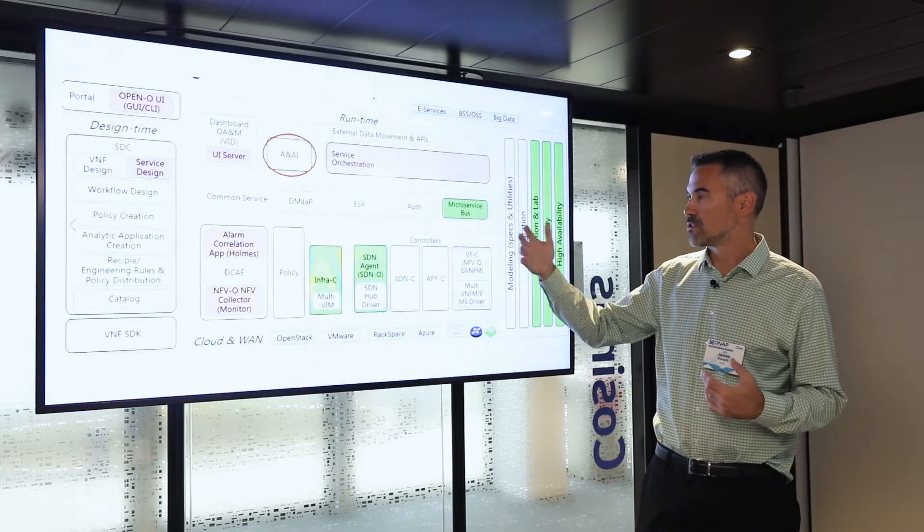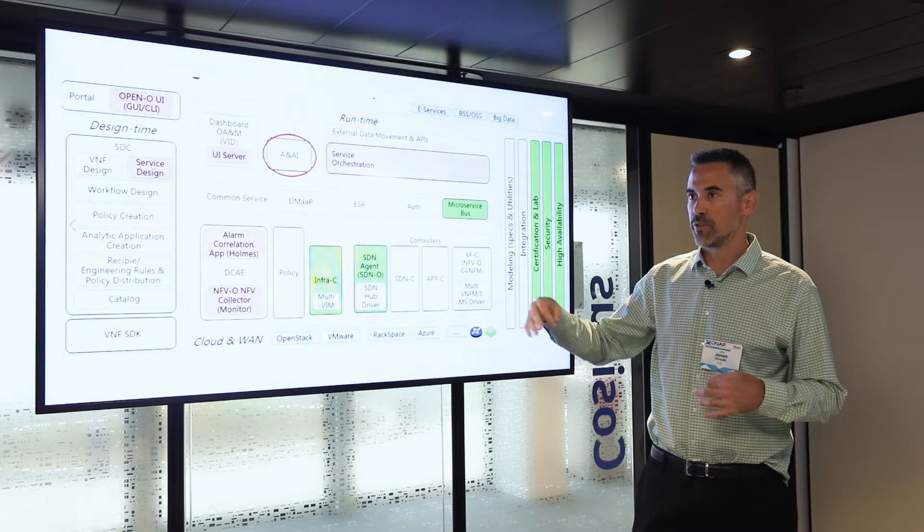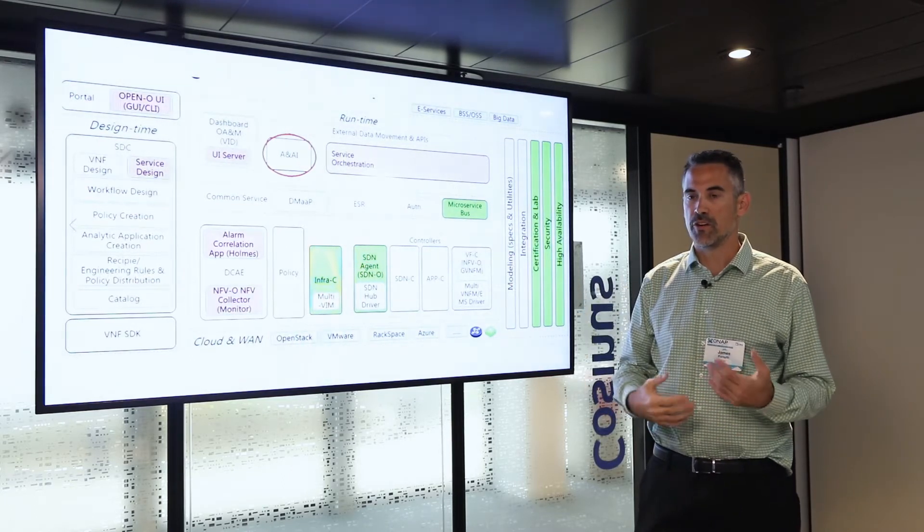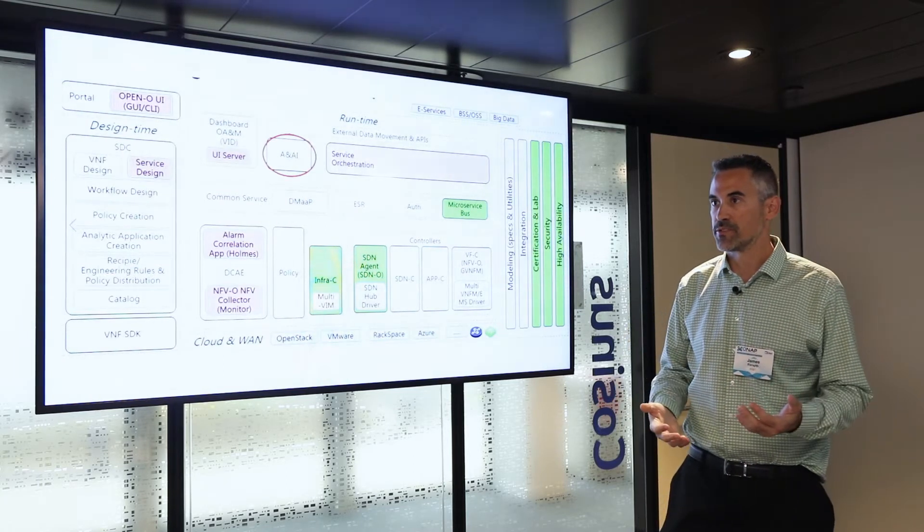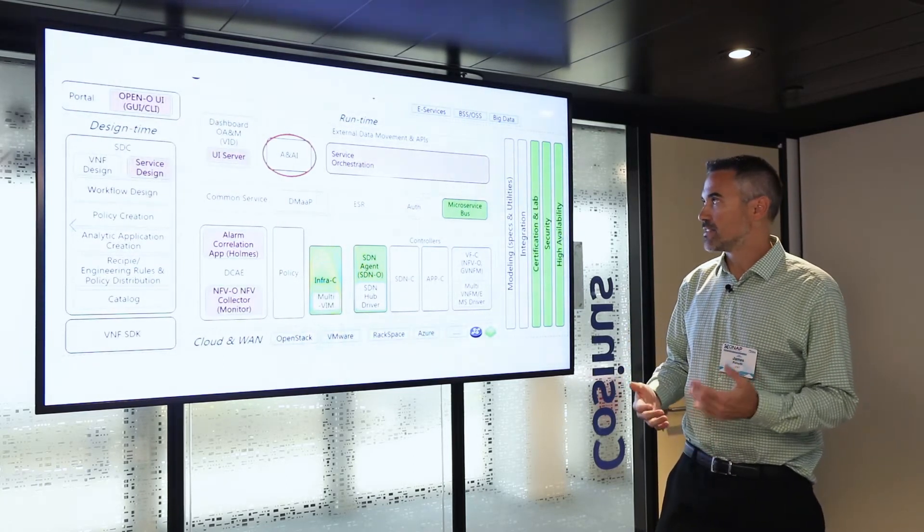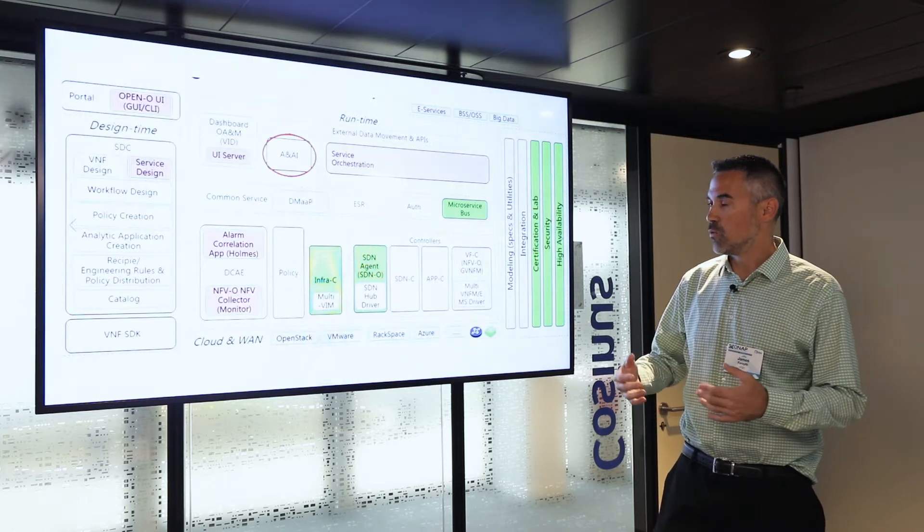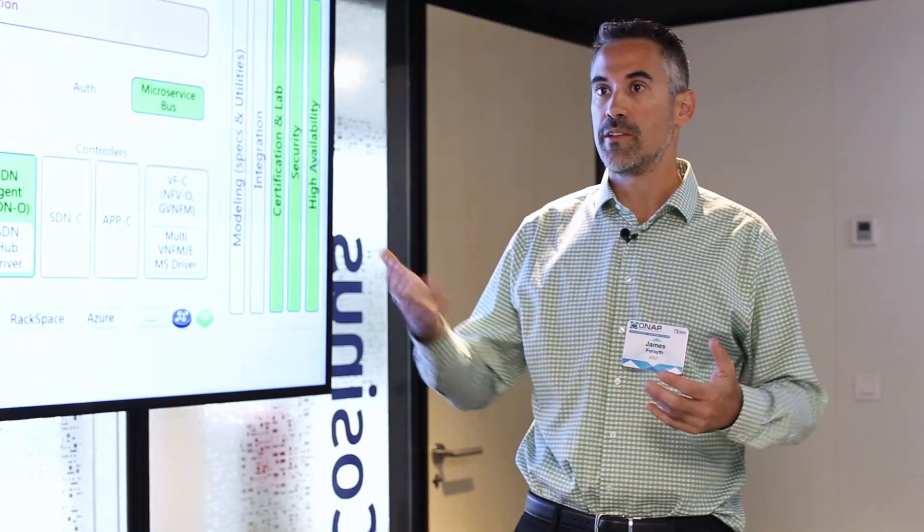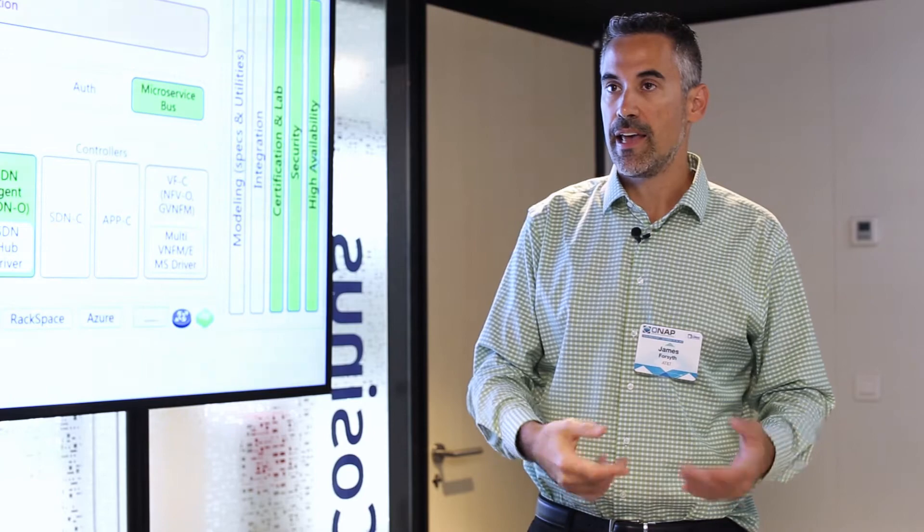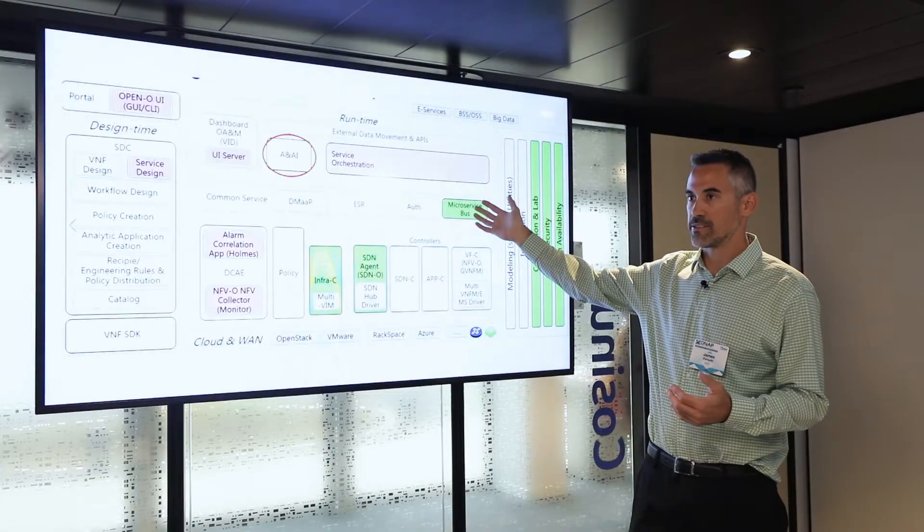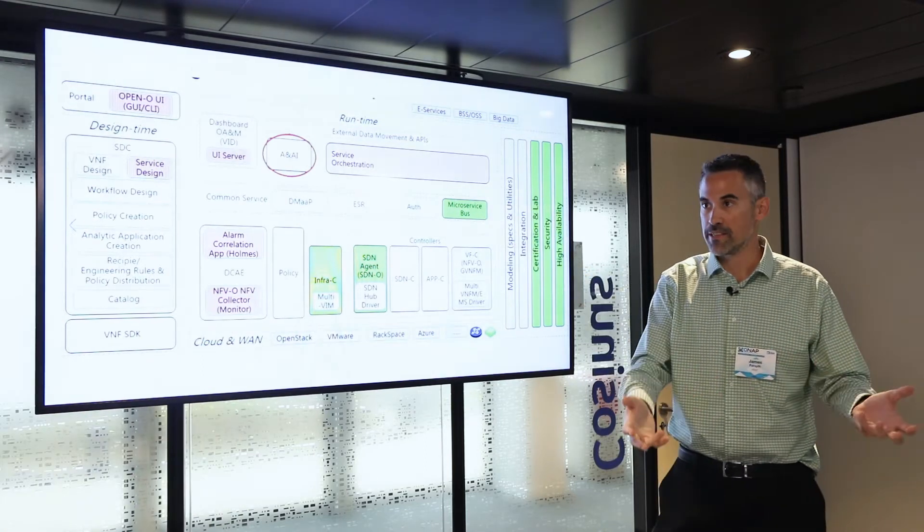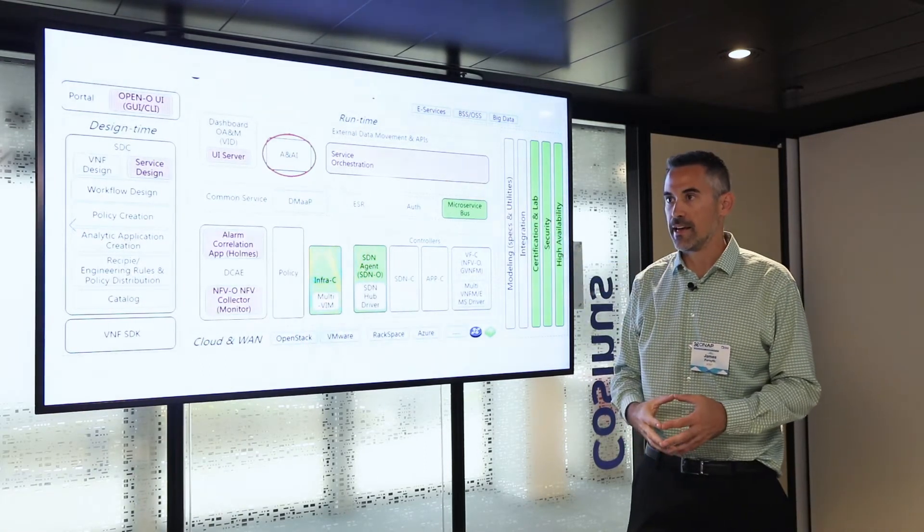So, in a typical service instantiation flow, VID, Virtual Infrastructure Deployment, will contact ANEI to determine the set of subscribers that are currently in the system. Using that set of customers, we can know what kind of services that customer already owns and what kind we can deploy. So in VID, user picks what kind of service to instantiate and then VID contacts SO. SO then goes and creates the service and then puts the data in ANEI.